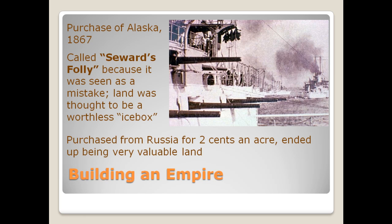In 1867, the United States purchased Alaska. This purchase was called Seward's Folly because it was seen as a mistake by most Americans — the land was thought to be a worthless icebox, purchased from Russia for two cents an acre. Of course, this land ended up being very valuable. It was initially purchased because we thought we could possibly extend the American frontier into Canada, which was being governed by the British, making it more of a military acquisition.